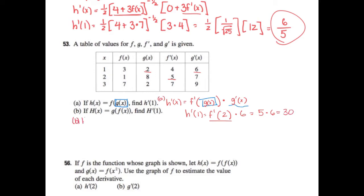Part b: big H of x equals g of f of x, so now my baby is f of x and I'm doing g of box. The derivative is g prime of box times the derivative of the box, which is f prime of x. So H prime of x equals g prime of f of x times f prime of x. To find H prime of 1: f of 1 is 3, f prime of 1 is 4, g prime of 3 is 9. So 9 times 4 is 36.